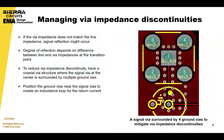In managing your VIA discontinuities, if the VIA impedance does not match the transmission line impedance, the signals passing through the VIA may reflect back. The magnitude of this reflection depends on the difference between the impedance of the trace and the VIA at that transition point. To reduce the impedance discontinuity, you can implement a coaxial VIA structure, where the signal VIA at the center is surrounded by multiple ground VIAs, positioned to create a proper inductance loop for the return current.